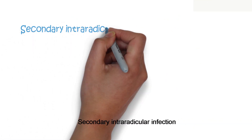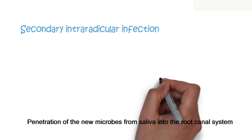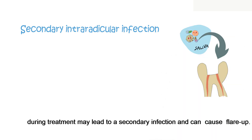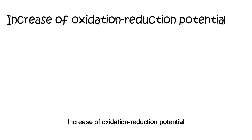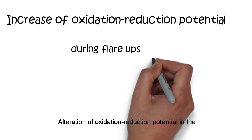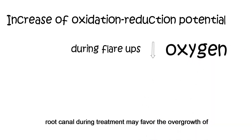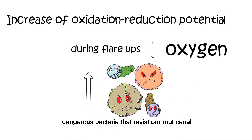Next is secondary intra-radicular infection, meaning penetration of new microbes from saliva into the root canal system during treatment may lead to secondary infection and can be a cause of flare-up. The next difficult topic is increase of oxidation-reduction potential. Alteration of oxidation-reduction potential in the root canal during treatment may favor the overgrowth of dangerous bacteria that resist our root canal procedure and lead to flare-ups.